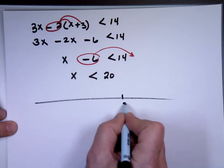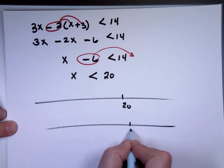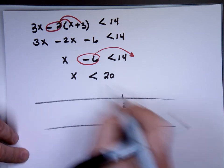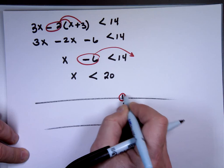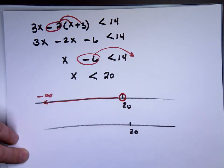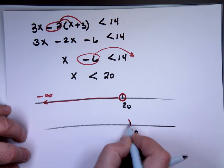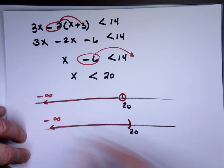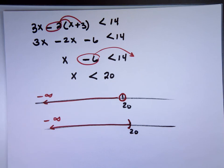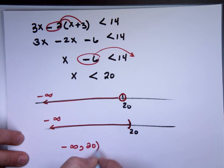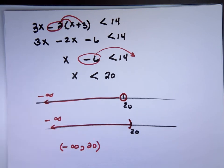So, this is the 20. So my solution. 20 is not included. So it's open. Circle to the left. Parenthesis, which means not included, to the left. And where is my answer? From where to where? Negative infinity. Negative infinity to 20. Neither one is included. Thank you.